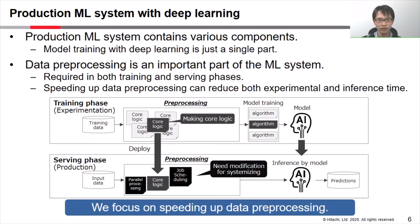Data scientists develop this data preprocessing logic by feature engineering. The extracted features are used to train models. By speeding up data preprocessing, data scientists can perform more experiments to improve their models.